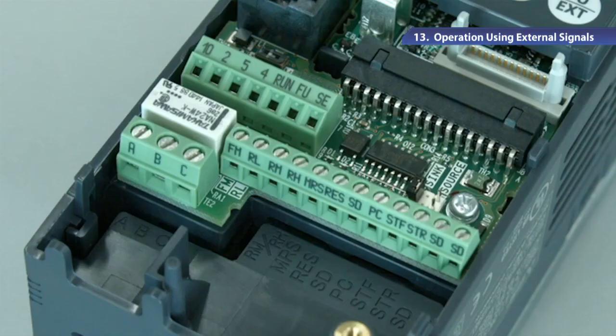Now, let me explain how to wire the control circuit terminals. This figure shows the layout of the control circuit terminals.